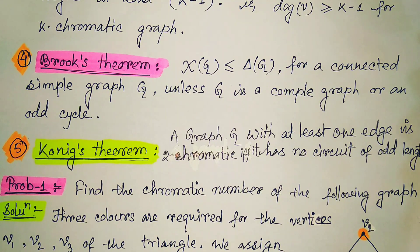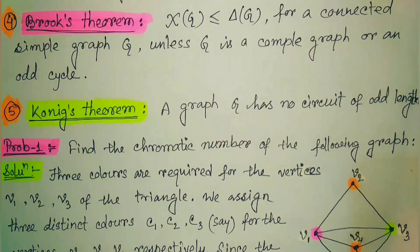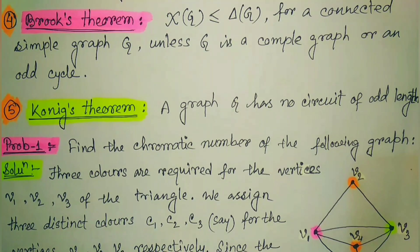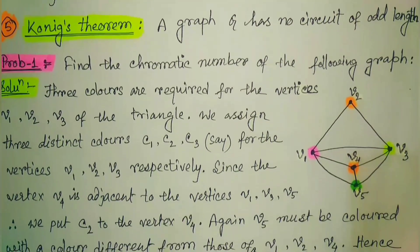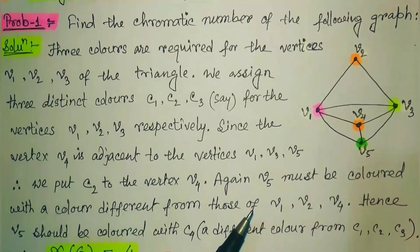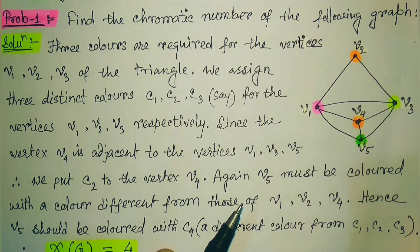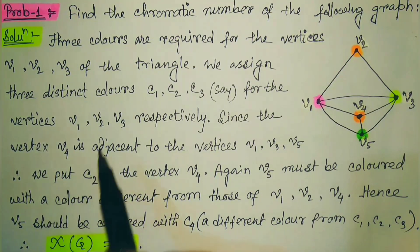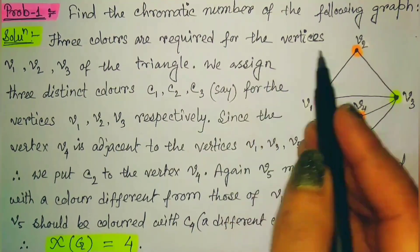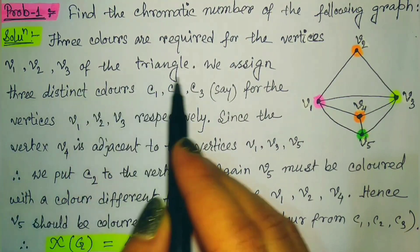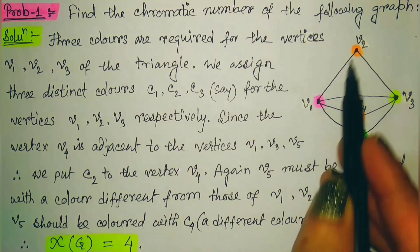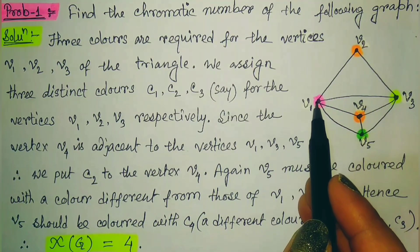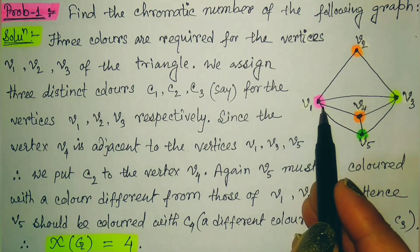The first problem is: find the chromatic number of the following graph. Initially, three colors are required for the vertices v1, v2, v3 of the triangle. We know if a triangle is present, to color it we require a minimum of three colors. So for the triangle v1, v2, v3, we require three colors.